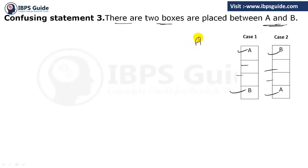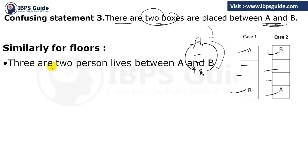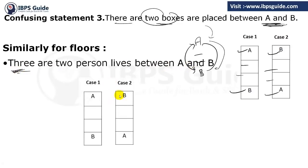If you write it as a point: A, then 2, then B — both arrow directions are possible because B can be above A or below A. They have just said there are two boxes between A and B. Similarly for floors, there are two persons living between A and B — same concept. A can be above or A can be at the bottom. This is applicable on both box and floor based puzzles.